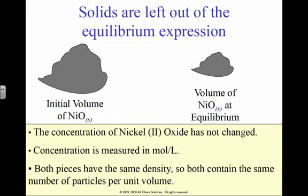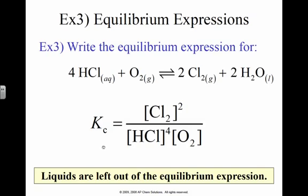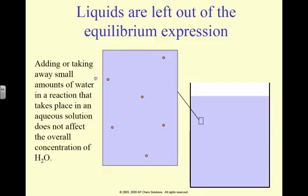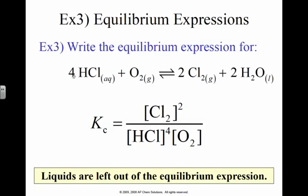This is aqueous, this is a gas, this is a gas, this is a liquid. Liquid water does not have a molarity either, so liquids are left out of the equilibrium expressions as well. So this is just going to be chlorine gas squared because of the two, over hydrogen chloride or hydrochloric acid to the fourth power times oxygen. Products over the reactants; you can't use solids, you can't use liquids.